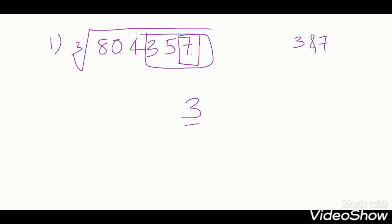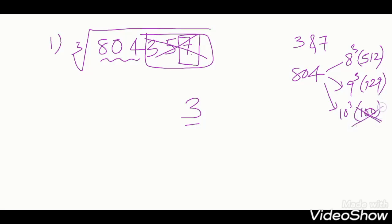Next we have to neglect 3 digits. Next we have 804. We know that 8 cube is nothing but 512, 9 cube is nothing but 729 and 10 cube is nothing but 1000. 1000 is crossed over. We have to take lesser. 9. 9 we have to take. The answer is 93. Hope you understand. Let's see one more problem.